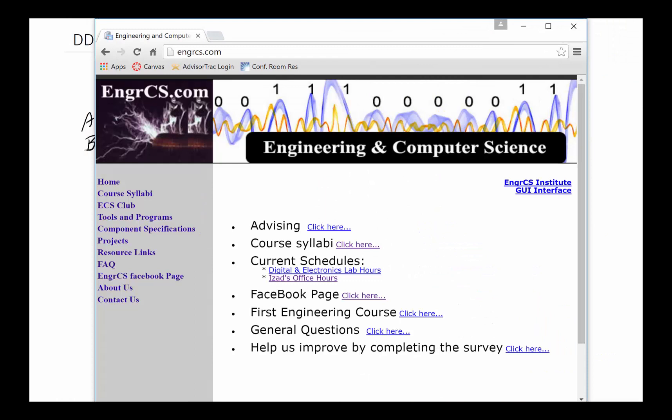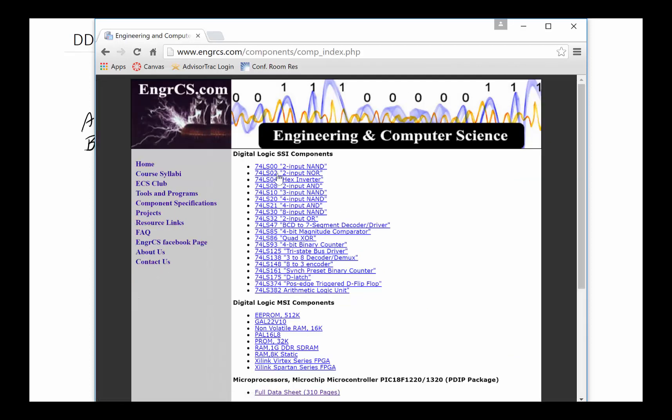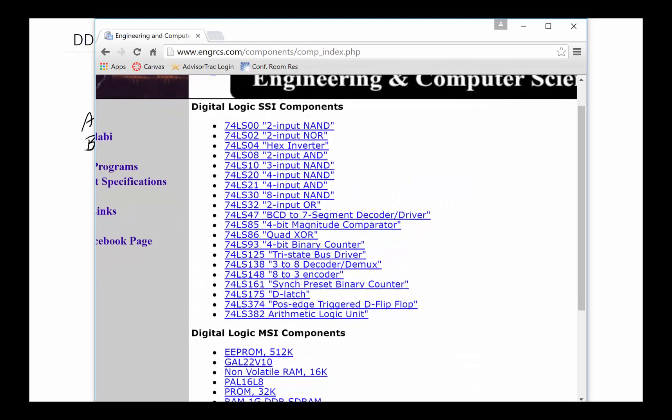The other choice would be to take a look at engrcs.com website. One of the items that is available is component specification. You click on components, and all of these digital logic gates are listed here. The one we were just talking about is the 74LS32, a two input OR gate.